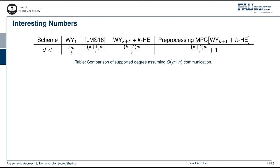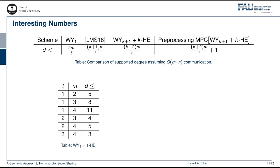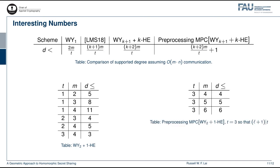Finally, I would like to show you some interesting numbers. Here is a table comparing the supported degree of different schemes, assuming a communication complexity linear in M times N. Our main HSS scheme, obtained by compiling the WYK plus 1 scheme with a degree K homomorphic encryption scheme, supports a degree higher than that of LMS18 by an additive factor of M over T. Furthermore, if we allow preprocessing, then an extra 1 degree can be supported. For concrete parameters, we are mostly interested in Linearly Homomorphic Encryption, or 1HE, because they are available from many assumptions. We will set L equals K plus 1, which is 2, so that the resulting HSS scheme is balanced. For preprocessing MPC, interesting examples can be obtained by setting T equals 3, which is equal to and hence is a multiple of L plus 1.